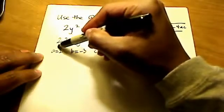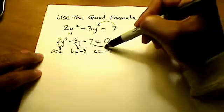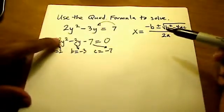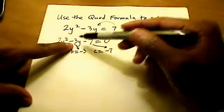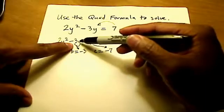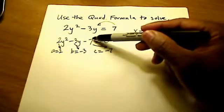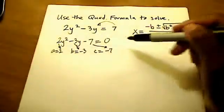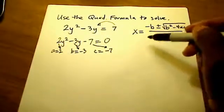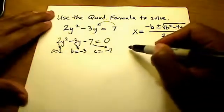All I'm doing here is picking off the coefficients for each of these terms. The a is the coefficient of the squared term, the b is the coefficient of the variable — just y or x by itself — and the c is the constant term on the same side. So now that I have my values a, b, and c, it's just a matter of plugging them into our quadratic formula.